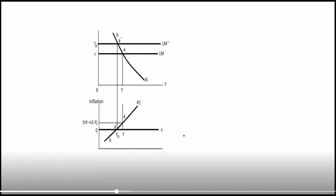Dropping the line from A-bar down to the PC curve, it cuts at A-bar on the Y line. The level of output has shifted back to the left, returning to the natural level of output YN. With output equal to potential output, the output gap is zero and there's no pressure on inflation.